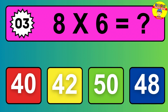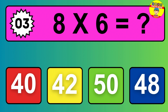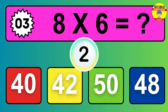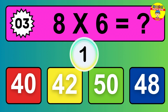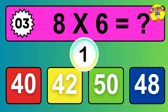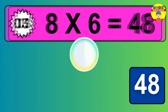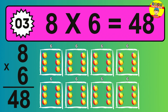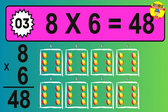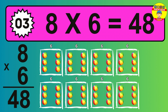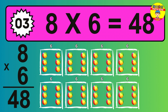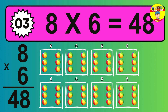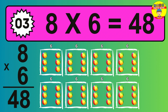Question 3. 8 times 6 equals what? The answer is 8 times 6 is 48. To calculate, we have 8 groups with 6 balls each one. So how many balls do we have? 48 balls.